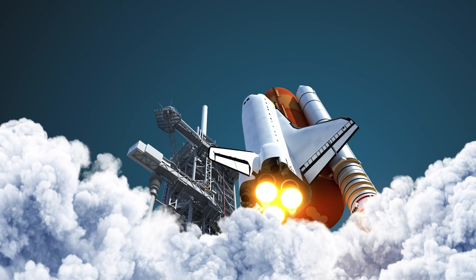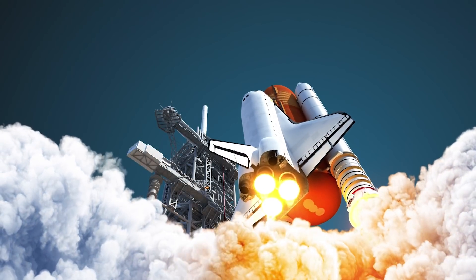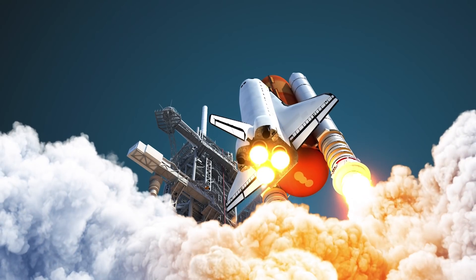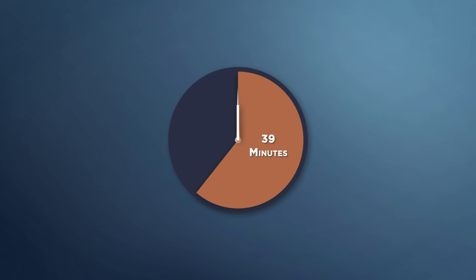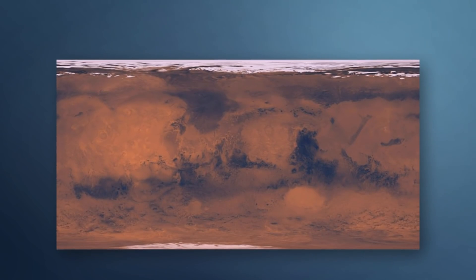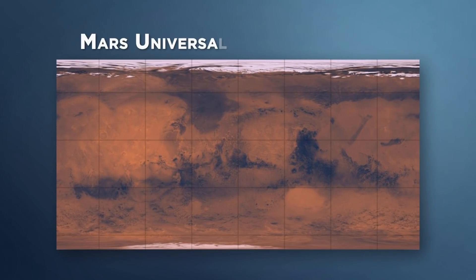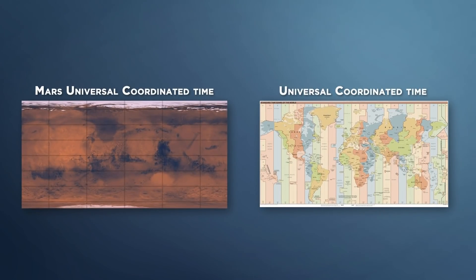As humanity continues to reach further and further out into the solar system and beyond, it will become necessary to adopt new ways of telling time just like on Mars. While early Mars rover missions used a rather primitive time system where they would literally just pause their clocks at midnight for 39 minutes in order to account for the time difference, more recent rover missions have begun to use what is increasingly becoming known as Mars Universal Coordinated Time, or MUCT.